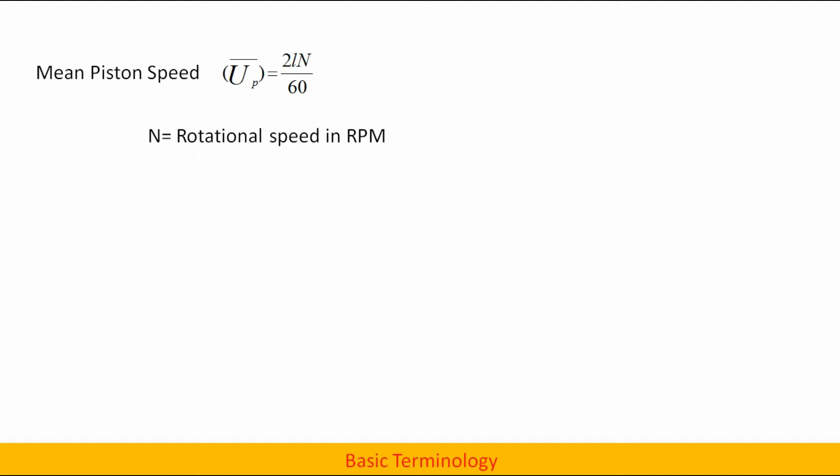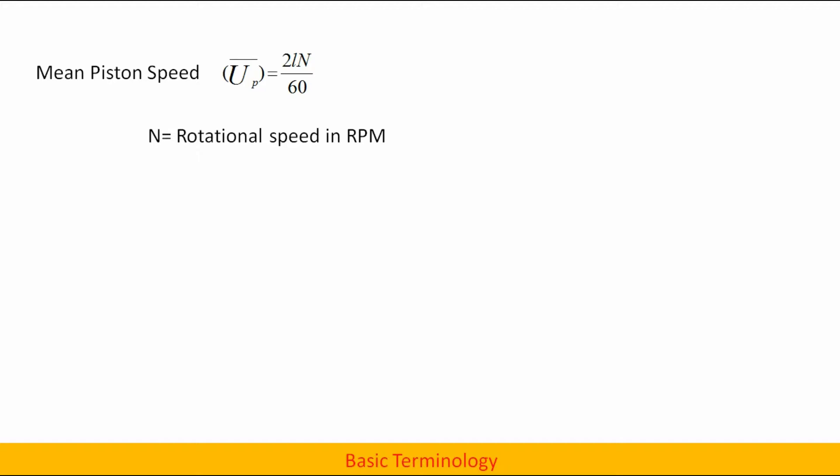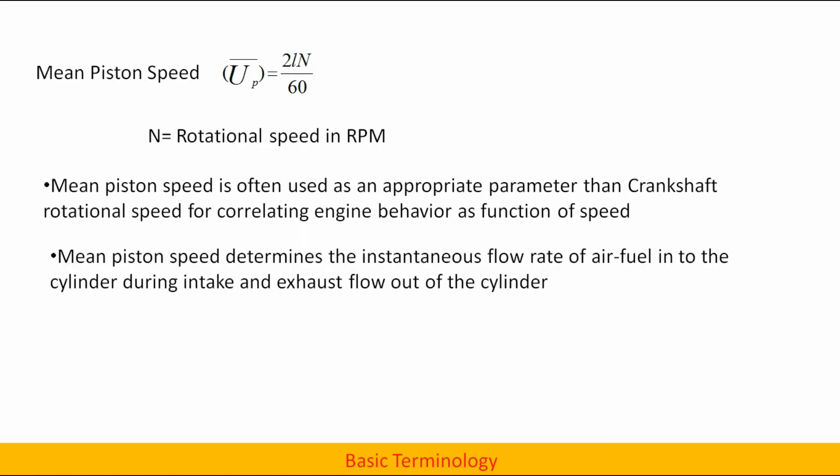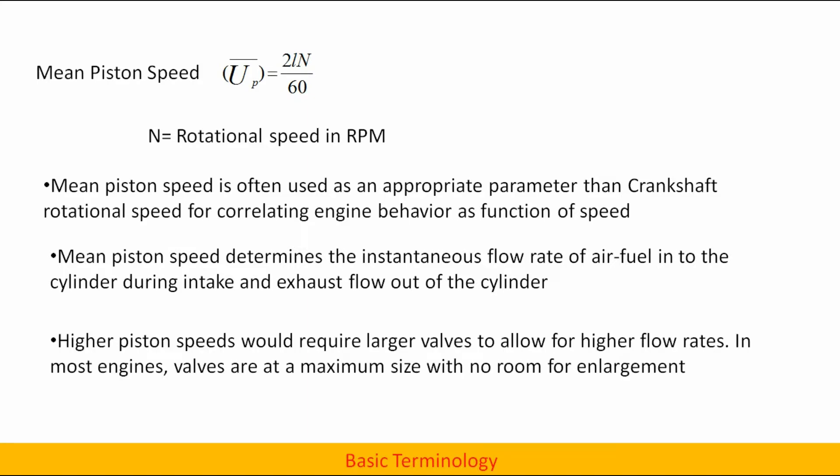Mean piston speed up bar is equal to 2ln by 60. Mean piston speed is often used as an appropriate parameter than crankshaft rotational speed for correlating engine behavior as a function of speed. Mean piston speed determines the instantaneous flow rate of air fuel into the cylinder during intake and exhaust flow out of the cylinder. Higher piston speeds would require larger valves to allow for higher flow rates. In most engines, valves are at a maximum size with no room for enlargement.